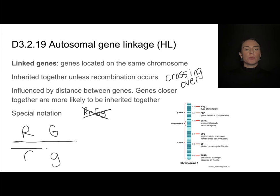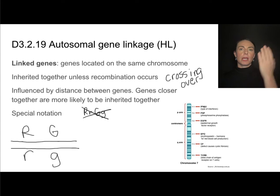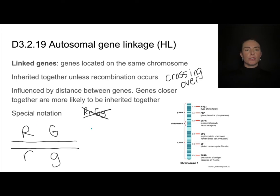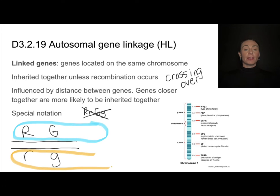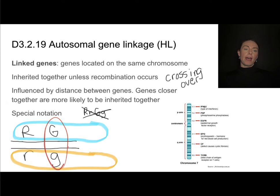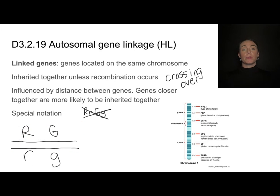Let me clean that up. The way to think about this is that these are two genes located on one chromosome from one parent, and these are two genes located on the homologous chromosome from the other parent. This tells me that the gene for R is linked to the gene for G — they are found on the same chromosome. This is how you write notation for linked genes, and it is very important that you write them properly.